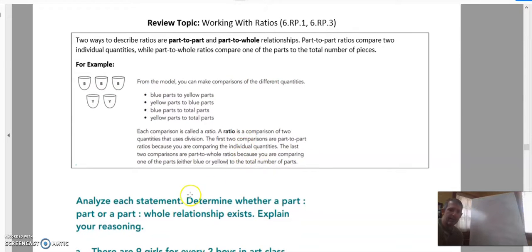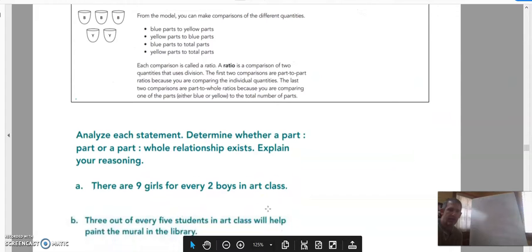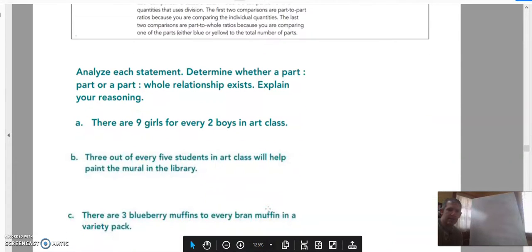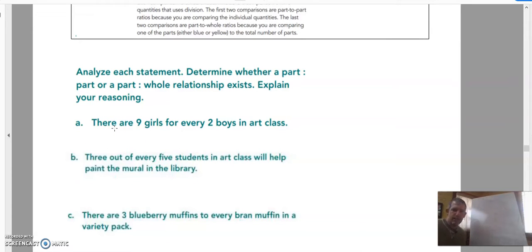It says analyze each statement, determine whether a part-to-part or a part-to-whole relationship exists and explain your reasoning. The first one, there are nine girls for every two boys in art class. So if we look at that, are we looking at a part-to-part or a part-to-whole? Because the whole class is going to be represented by how many total students there are. In this case, this is a part and this is a part. So A would be a part-to-part relationship.